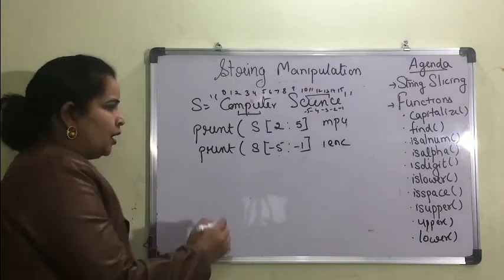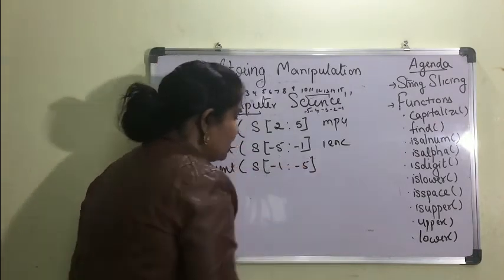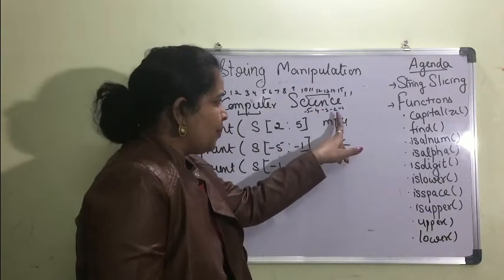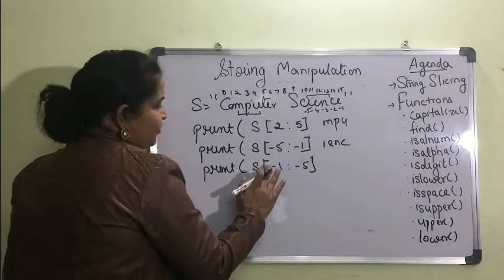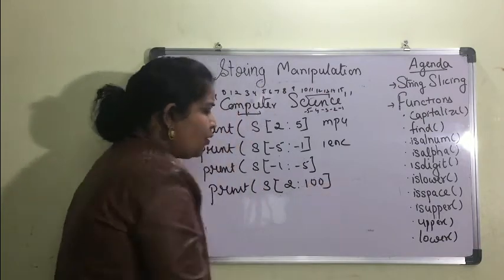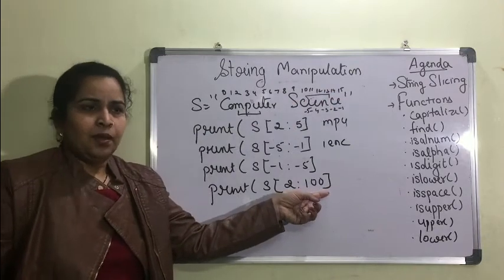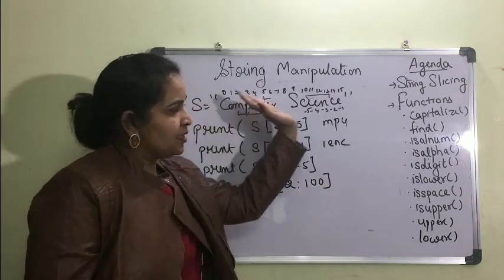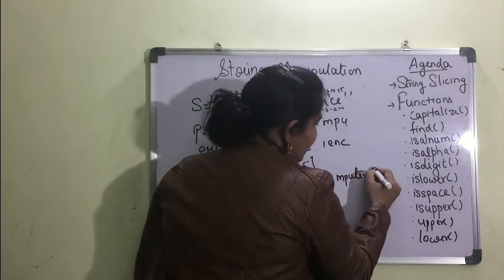s[-5:-1] with the upper limit exclusive will print characters from that range. But if you write s[-1:-5], the range doesn't match (it would need to go right to left), so it prints nothing. If you write s[2:100] and the string length is only 15, it will not generate an error — it will simply print the string from index 2 to the end.